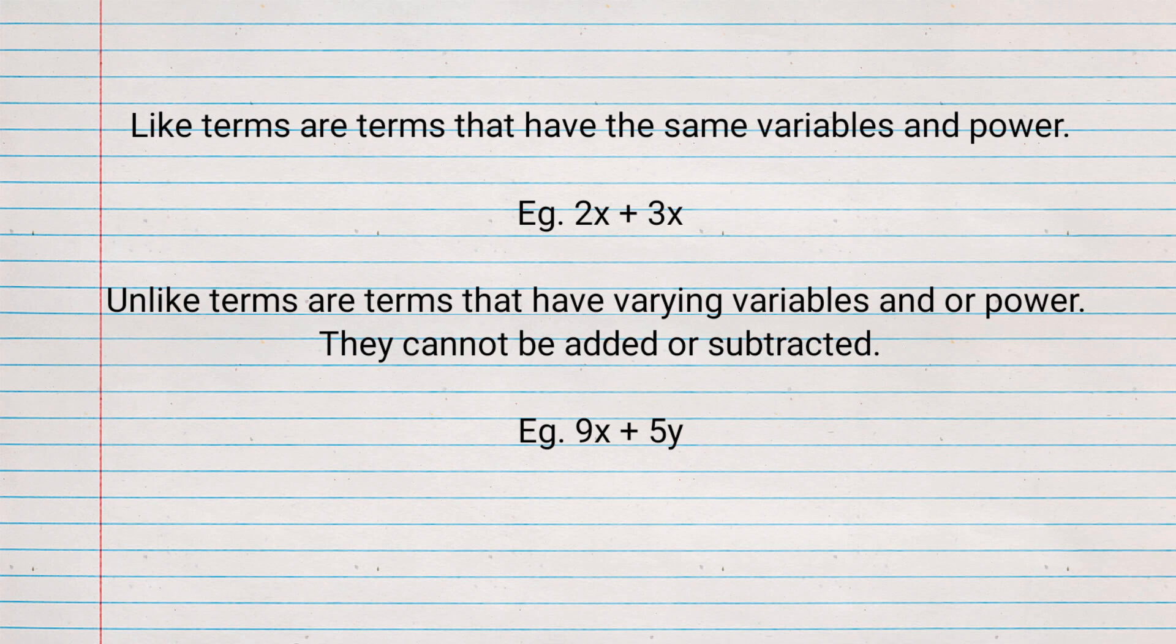Unlike terms are terms that have varying variables and/or power. They cannot be added or subtracted. Example: 9x + 5y.